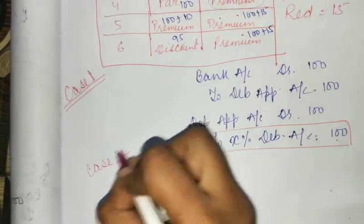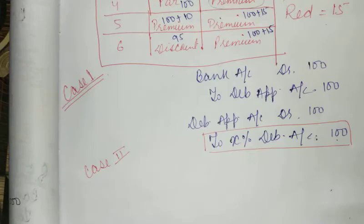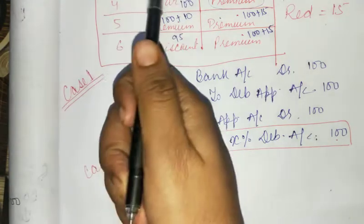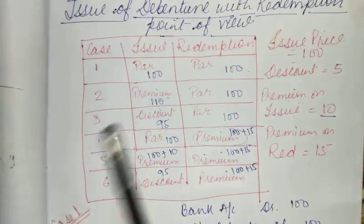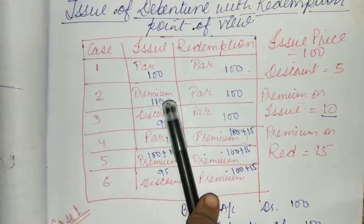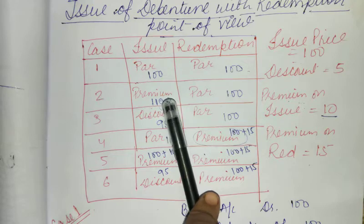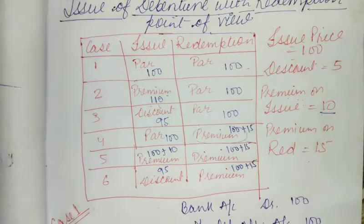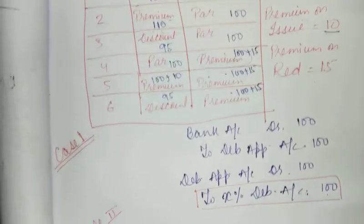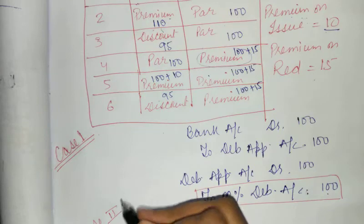Now case 2. Let's see case 2 — what is case 2? Issue at premium. See, case 2 is here — we are issuing at premium. How much is one share? 110 rupees. Okay, we will make the entry for it.